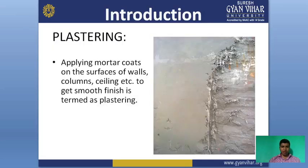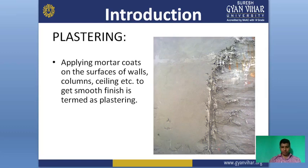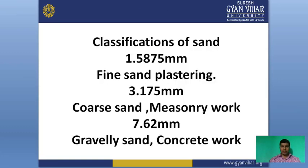What is plastering? Applying a mortar coat on the surface of walls, columns, etc. to get a smooth finishing is termed as plaster. We use plastering in our daily life when we construct our houses — on the wall for a better surface and smooth finishing. This process is known as the plastering process. Plastering is made of components such as sand, water, and cement.